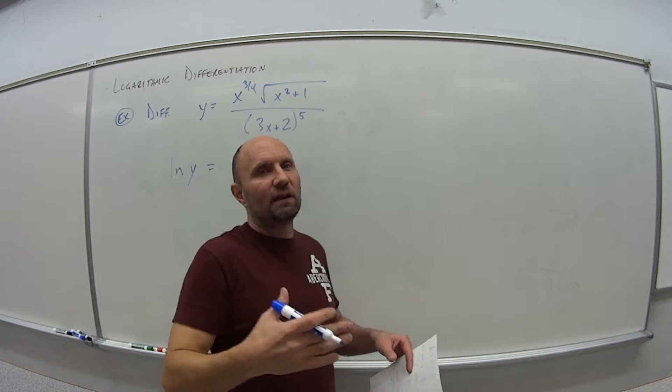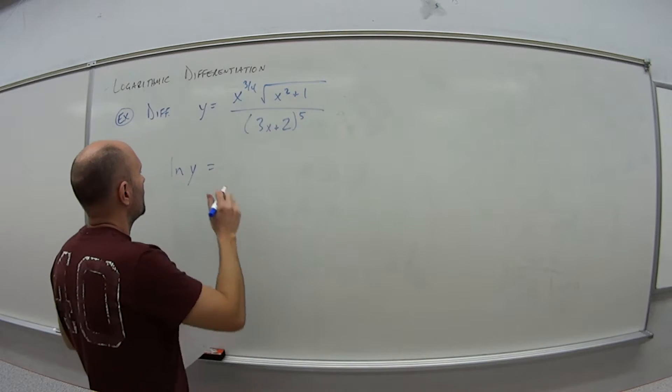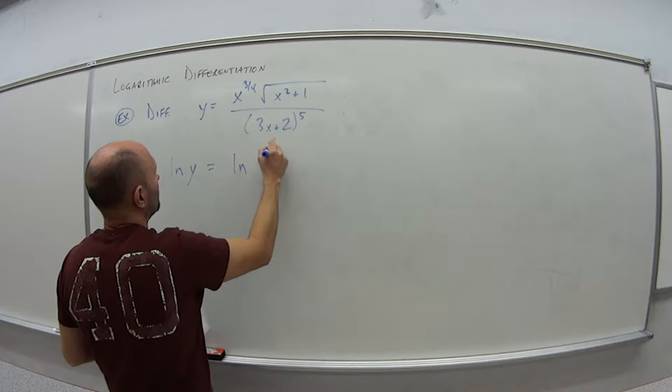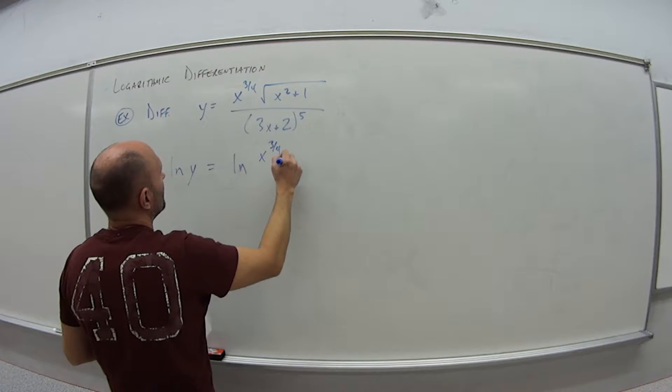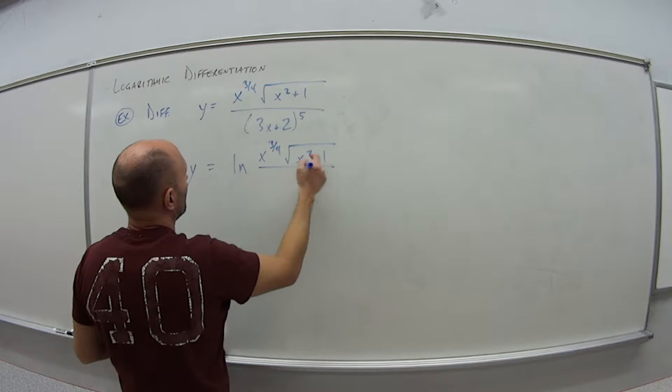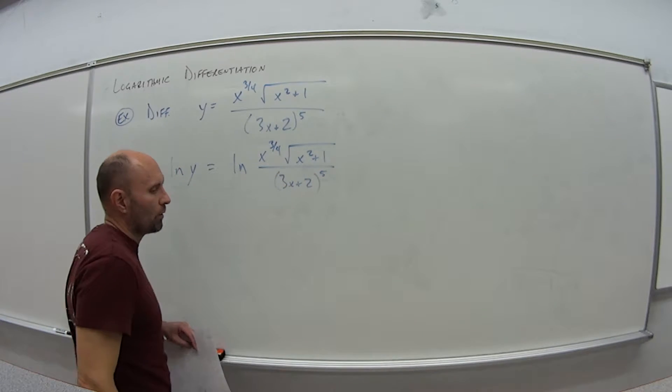That's like if I said y equals 3, and then I said y is the natural log of 3. They're not equal. You have to take the natural log of both sides. So the natural log of x to the 3/4 power times the square root of x squared plus 1 all over 3x plus 2 to the fifth power.